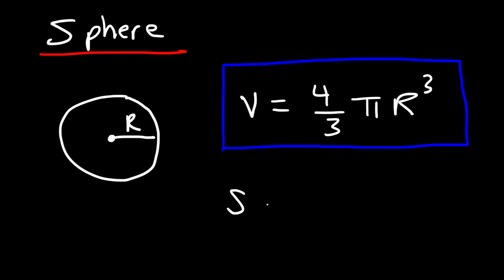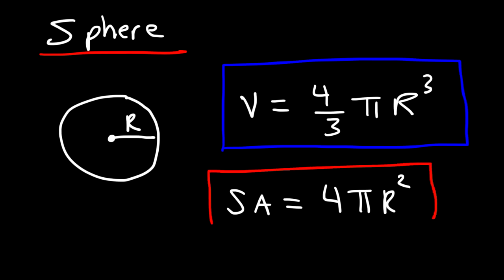The next formula you need to be familiar with is the surface area. The surface area is equal to 4 pi times the square of the radius. The units for area is always units squared, and for volume, it's always units cubed.